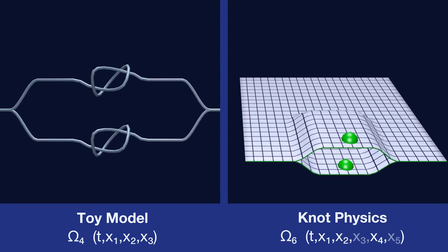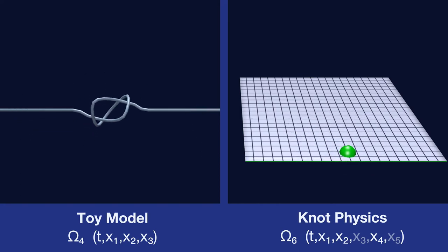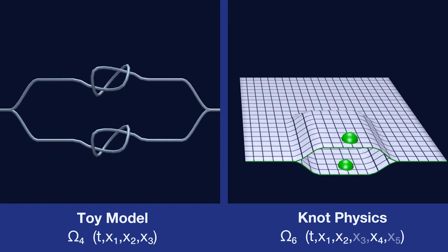One real particle, like an electron for example, would have one knot on every branch of the spacetime manifold. Virtual particles would also have knots on the branches of the spacetime manifold, but the difference would be that a virtual particle may not have one knot on every branch.